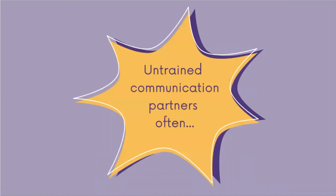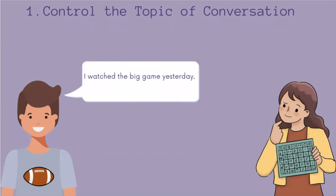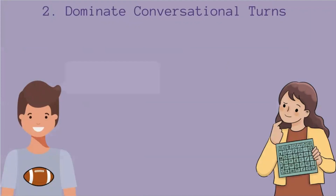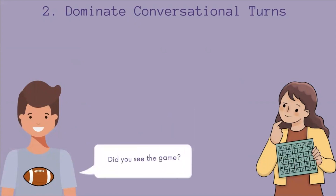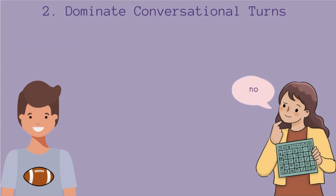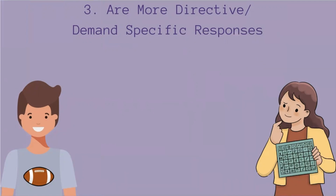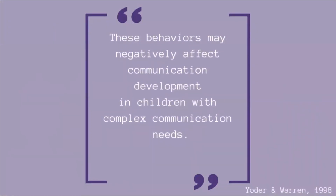Untrained communication partners often control the topic of conversation, dominate conversational turns, with AAC communicators acting as respondents in as high as 91% of communicative opportunities. They are more directive, often demanding specific responses.